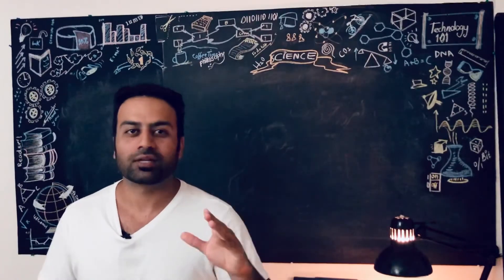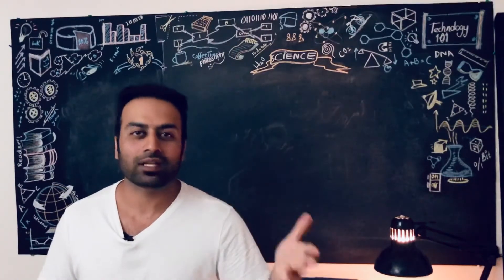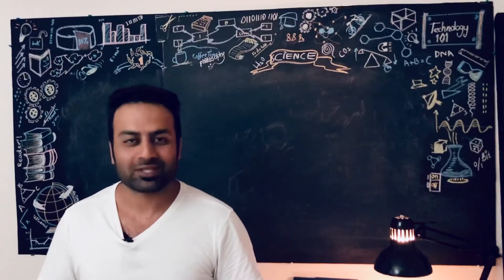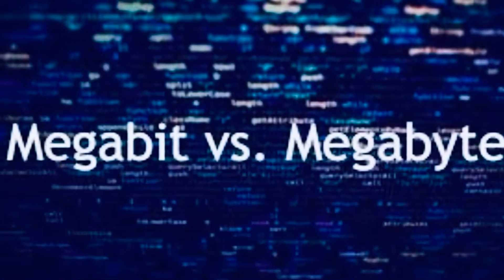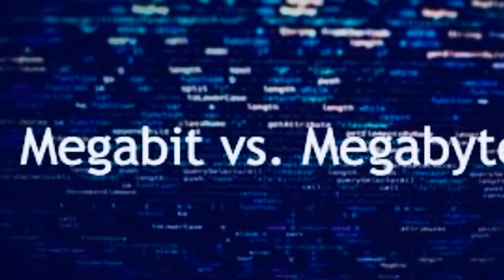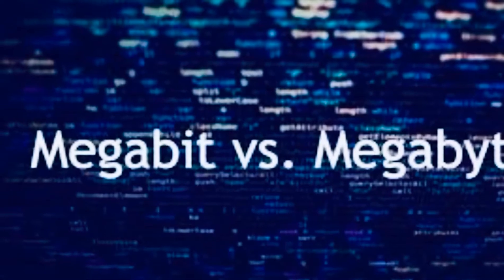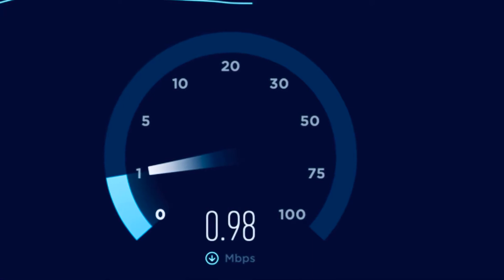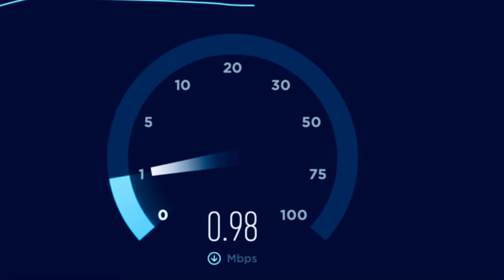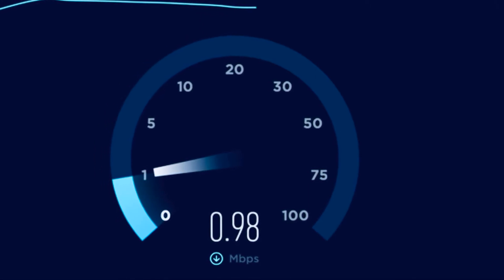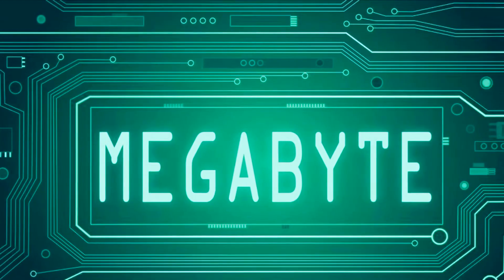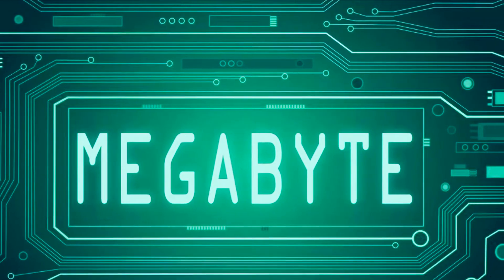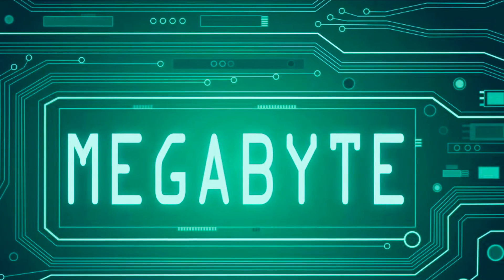One megabyte is equal to 8 megabits, but the terms are used in specific ways. Megabit per second, which we write as Mbps lowercase, is generally used to describe the speed of an internet connection. But megabyte, written as MB uppercase, usually refers to the size of a file or storage, like the hard drive in your PC or servers.